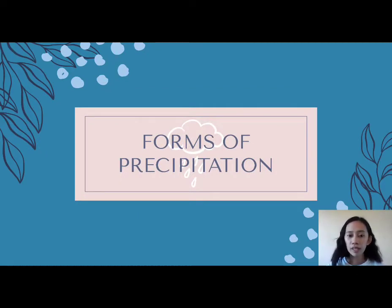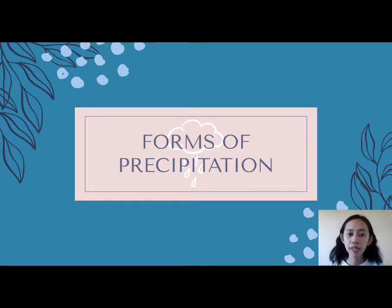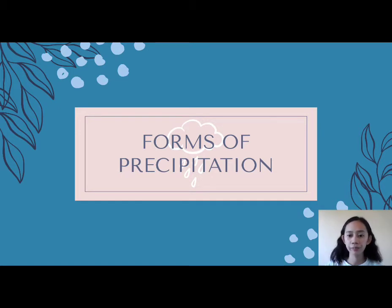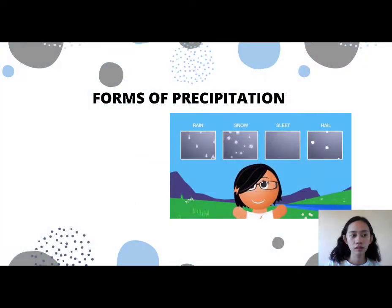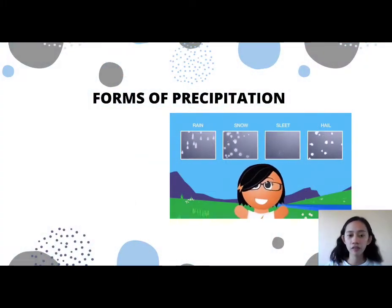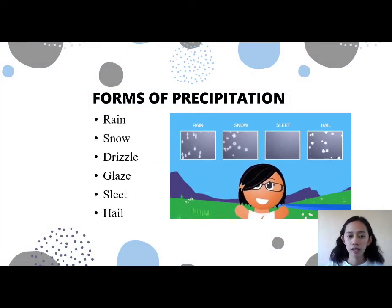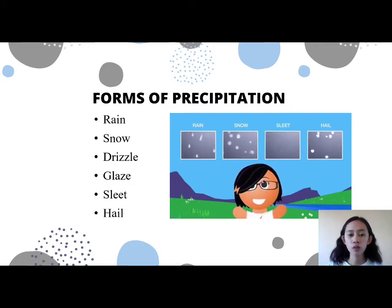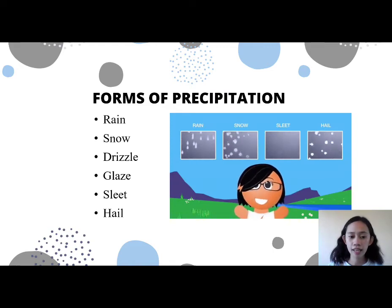Forms of precipitation — this is the first subject that I was assigned. Precipitation is classified according to its form in which it reaches the ground. The forms of precipitation are: rain, snow, drizzle, glaze, sleet, and lastly, hail.